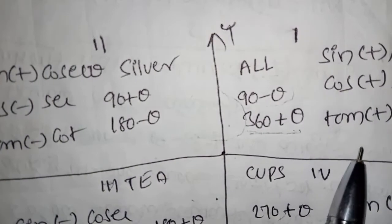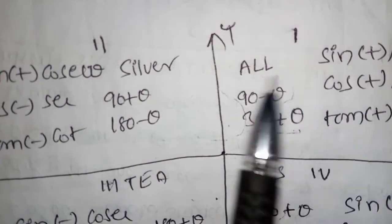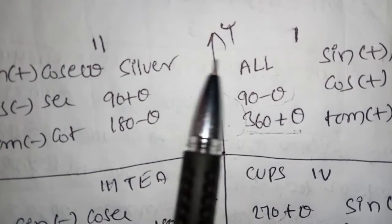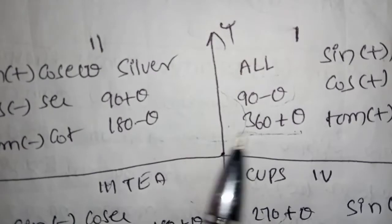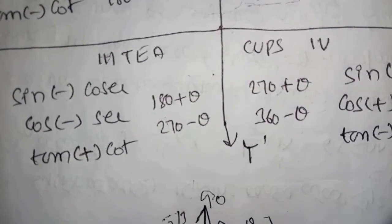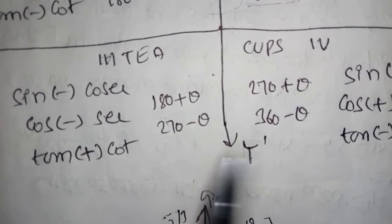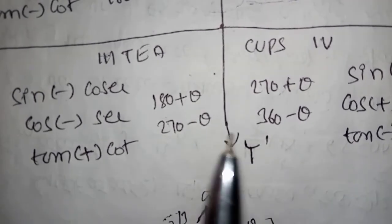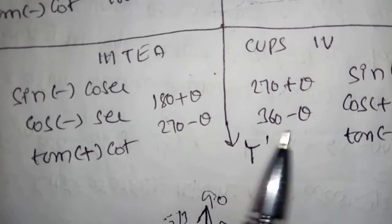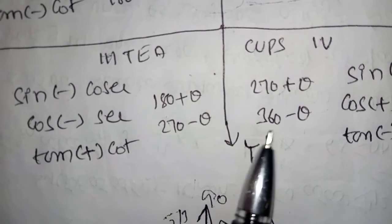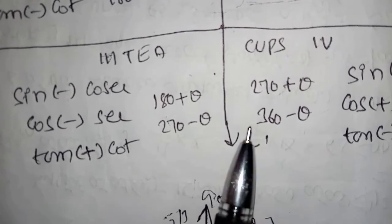Second quadrant is 90 to 180, third is 180 to 270, and fourth is 270 to 360. So we will cover the trigonometry. That is a little bit of a recap.